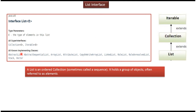Here you can see some of the implementing classes, like AbstractList, ArrayList, LinkedList, RoleList, etc. List is nothing but an ordered collection — it holds or contains a group of objects, and these objects are also referred to as elements.